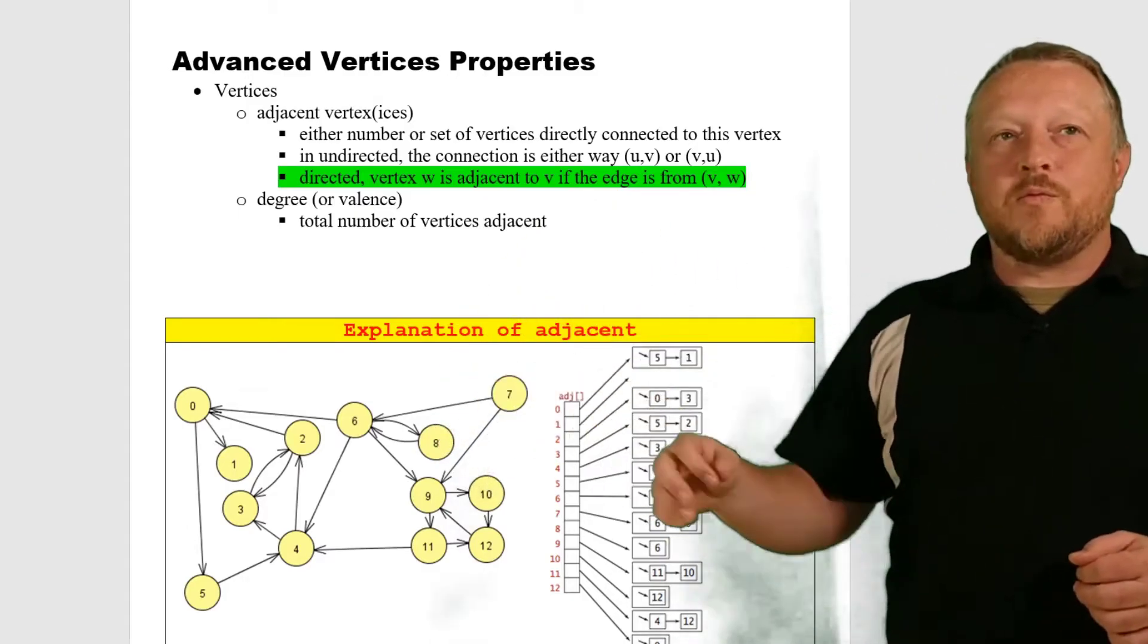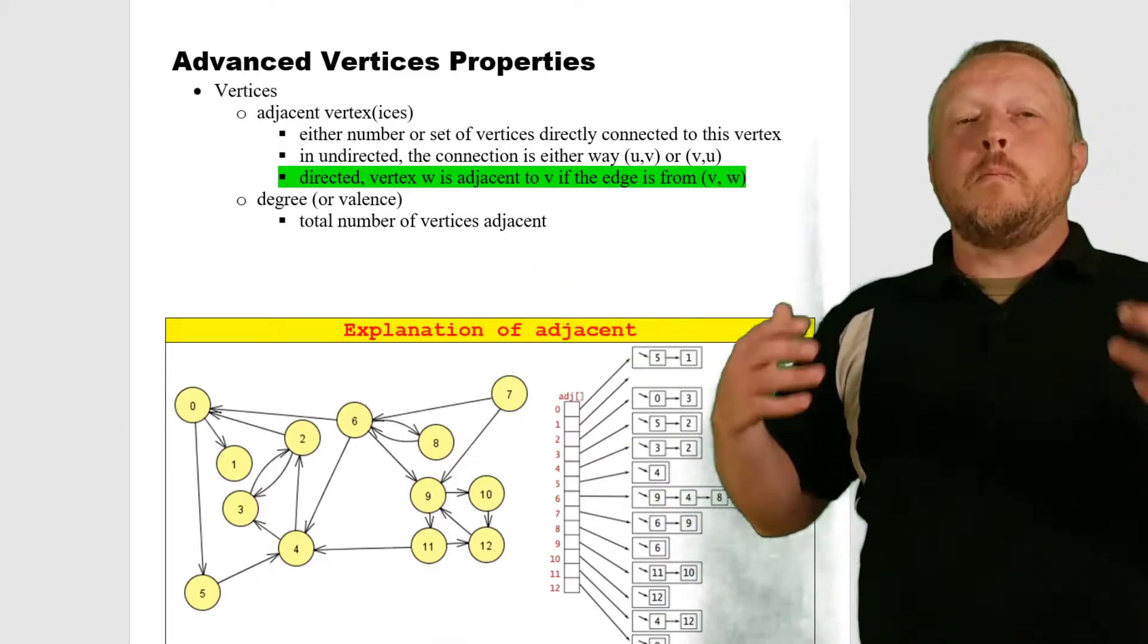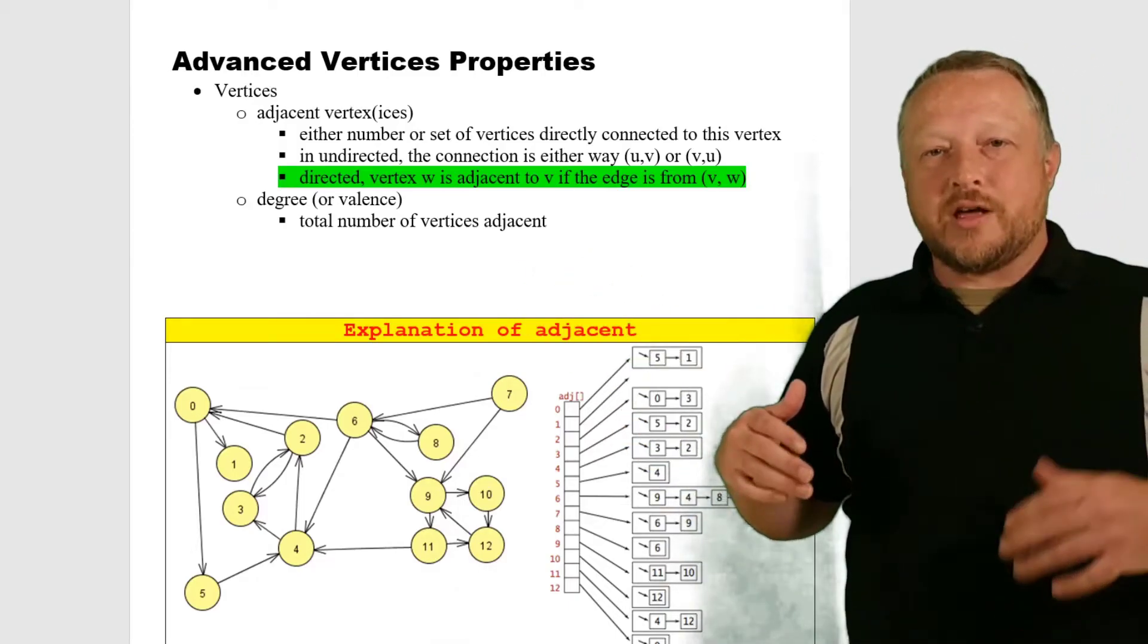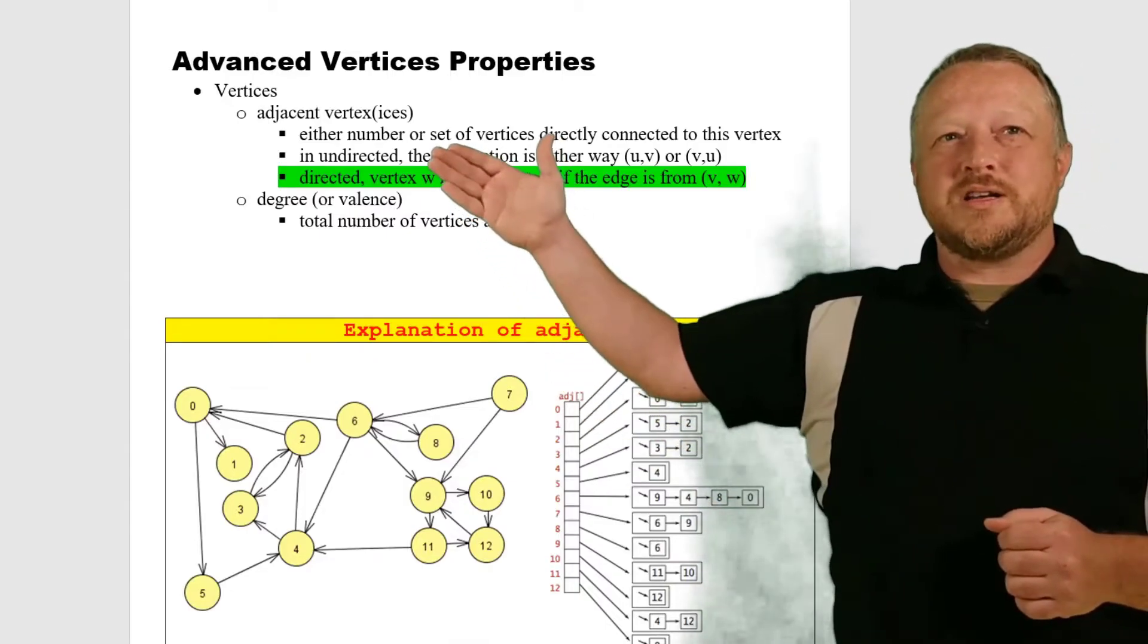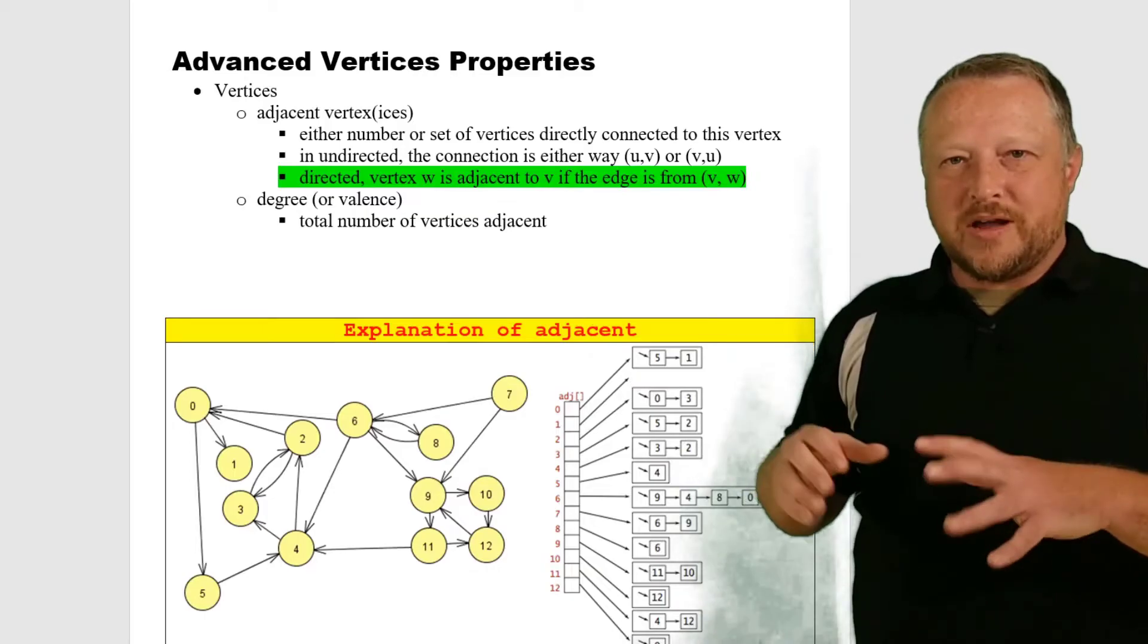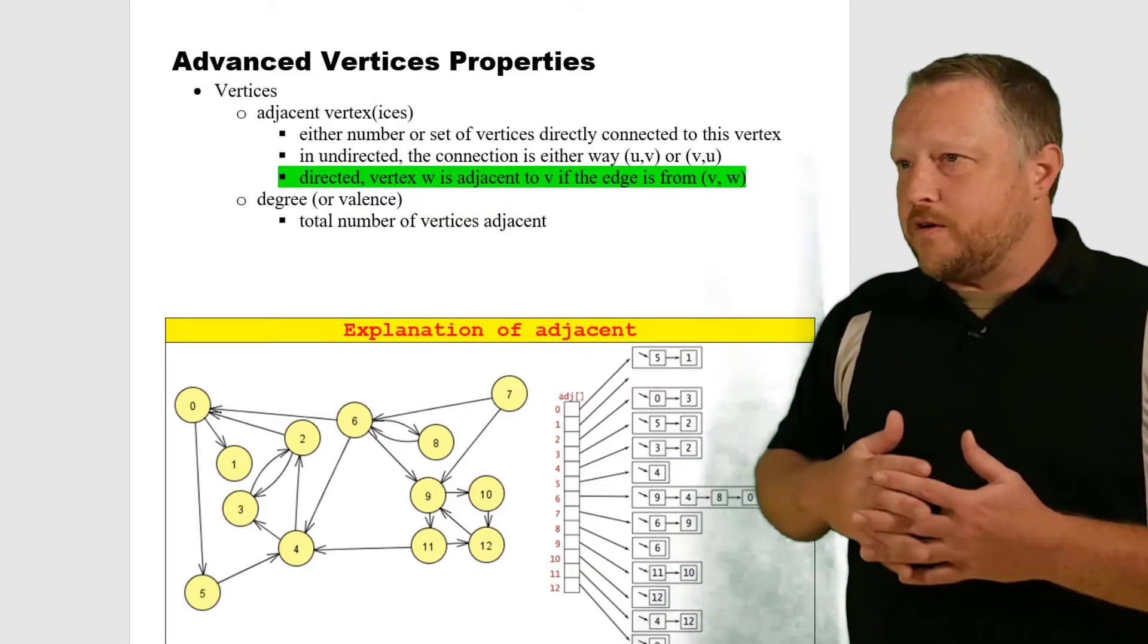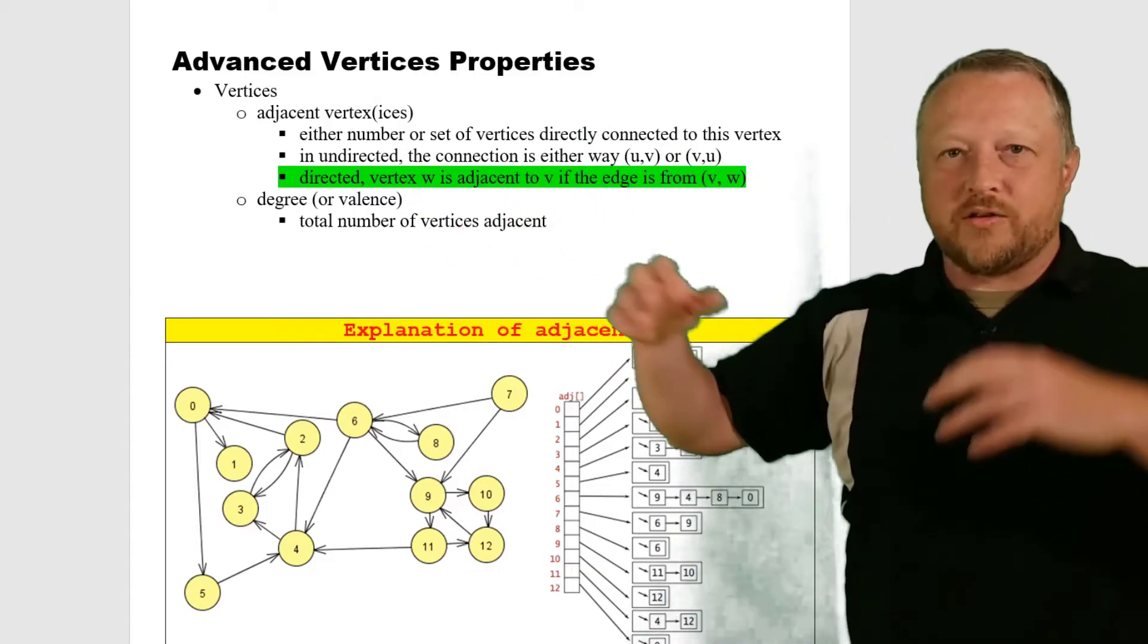And then we have our degrees, which is the number of total vertices that are adjacent to the vertex. So notice the adjacent vertex really is a set of vertices, so you'll be able to tell from a flight from Dallas out to other airports.